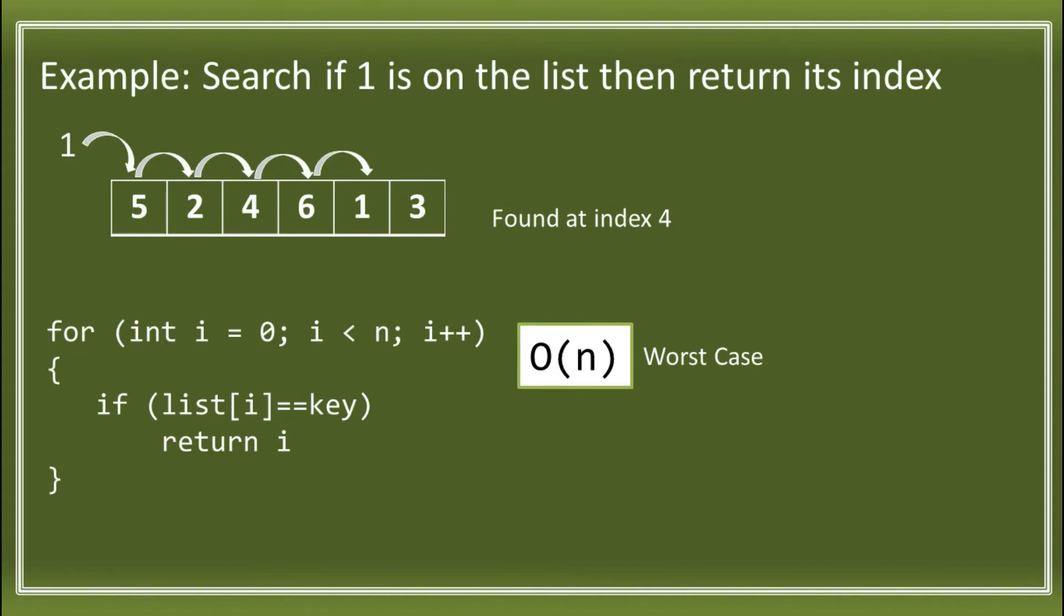For the best case, we have big O of 1. Best case happens when the key we find is on the first element of the array. For example, if we search for 5 and it's the first element, that is big O of 1 and that is the best case. We also have the average case which is big O of n divided by 2.